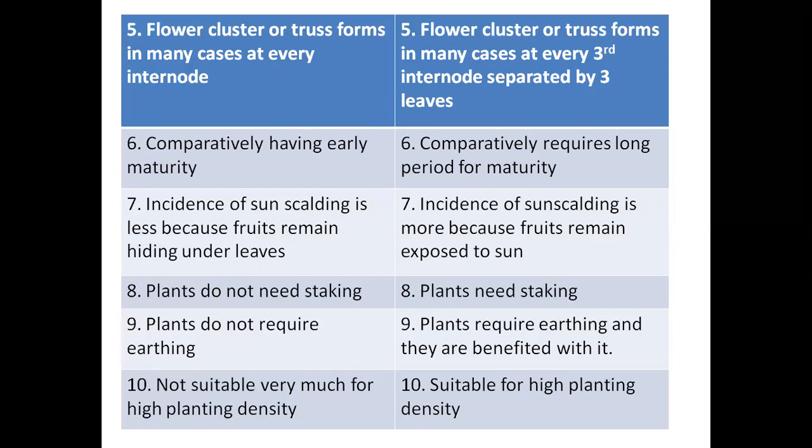In tomato, the flower cluster is called a 'truss.' In determinate types, the truss is formed at every node, whereas in indeterminate types it is formed at every third node. Determinate types are comparatively early in maturity because growth is restricted — all photosynthates go into development of already-appeared parts and completing fruit maturity, rather than also growing taller.